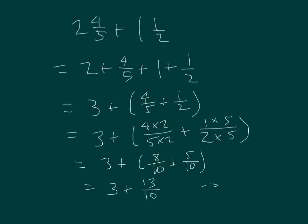13 tenths can be rewritten as 1 and 3 tenths. So we have 3 plus 1 and 3 tenths, which is equal to 4 and 3 tenths. Because 4 fifths plus 1 half was bigger than 1, our sum grew beyond the next whole number.